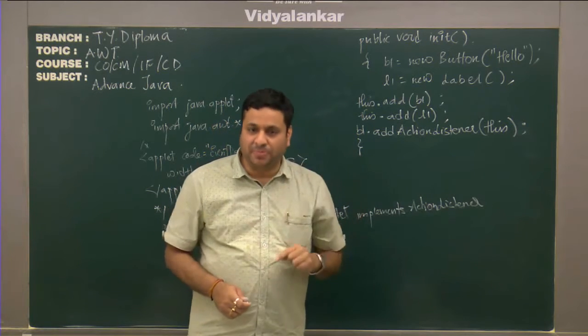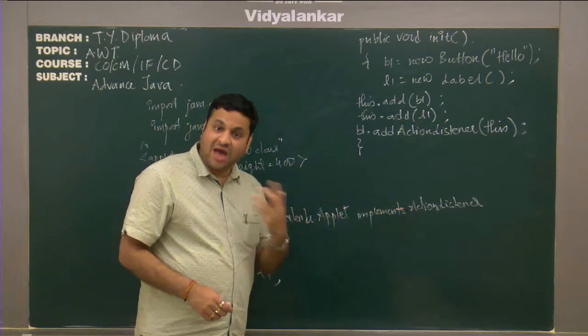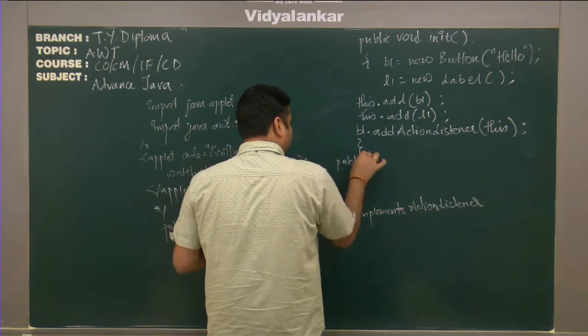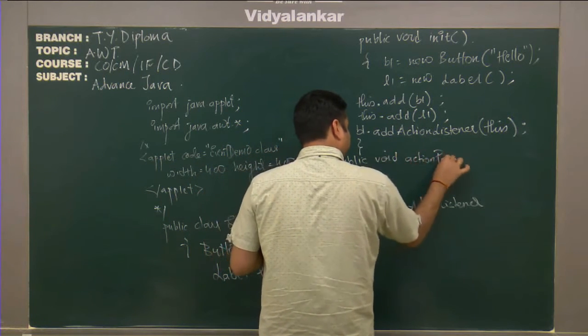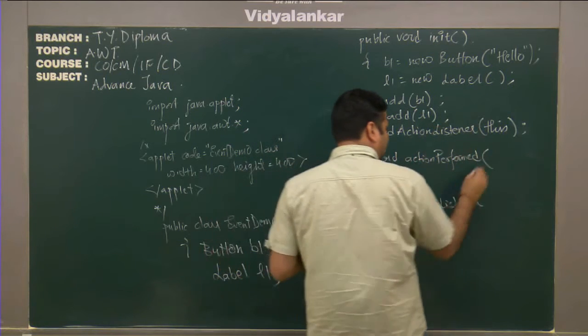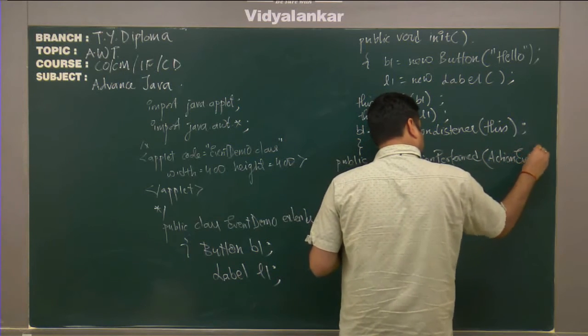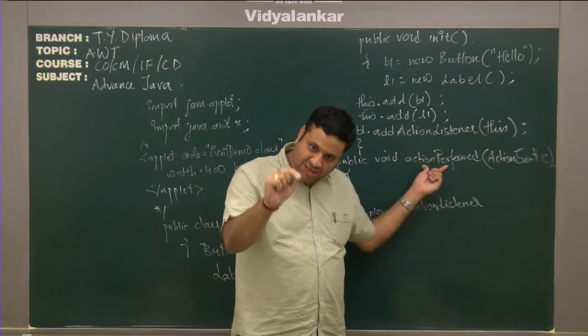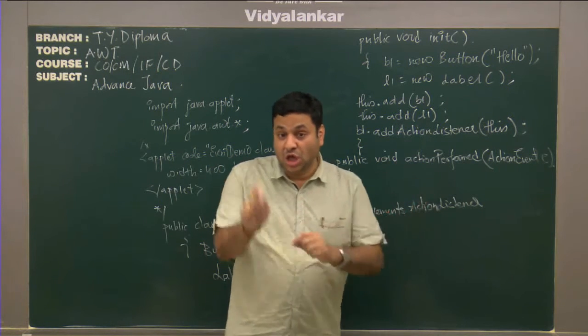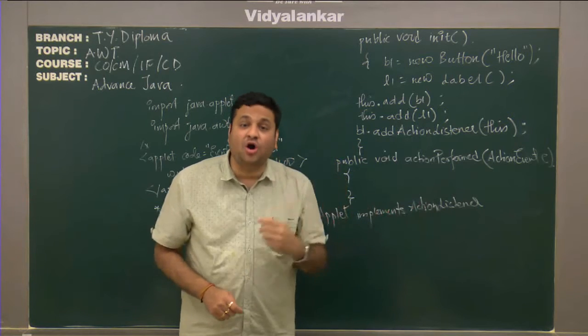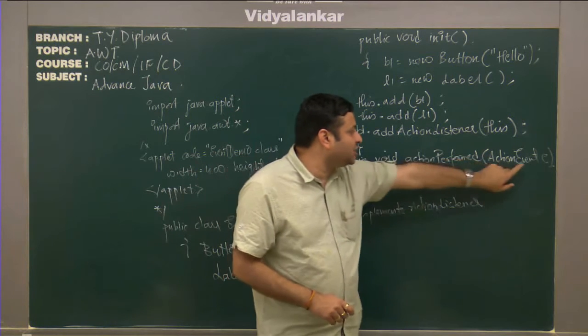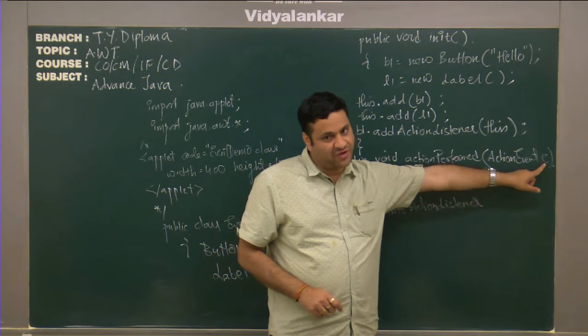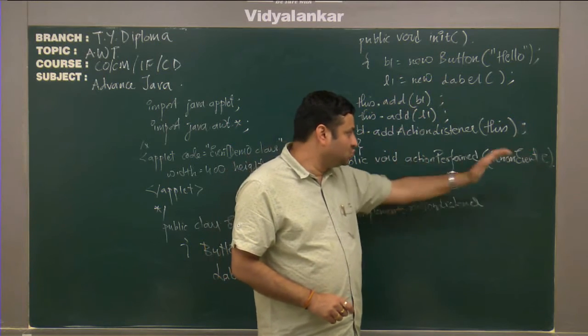Whenever the button is pressed, since we have implemented a listener, we have to override method. Action listener interface provides a method action performed that will take action event object. Action performed is a method that will be automatically called as soon as the button is pressed. When you press a button, you actually create object of action event class. That object will be passed as argument to this function. E is a reference to action event that will refer to the object of action event class. That action event object is used to call the method action perform.